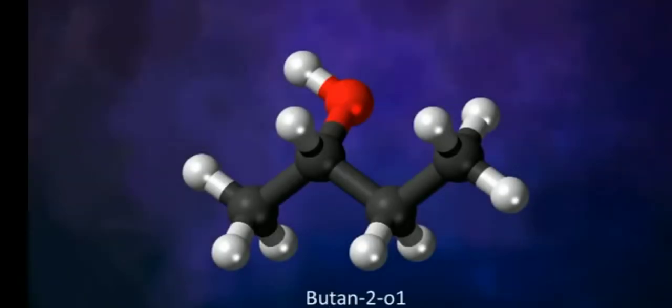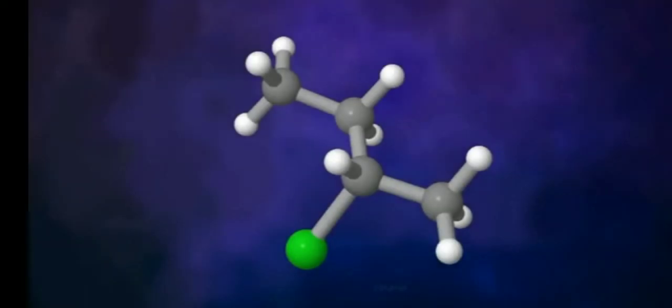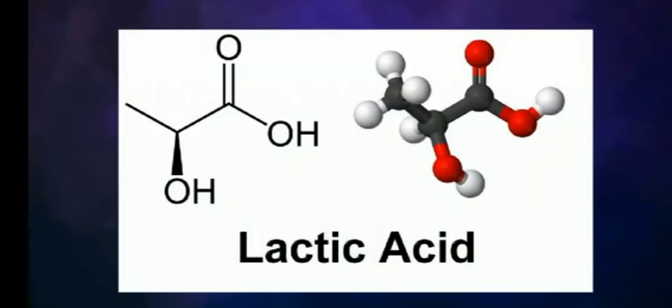For example, organic molecules such as butane-2-ol, 2-chlorobutane, and lactic acid have chiral structures. That is, they form non-superimposable mirror images.